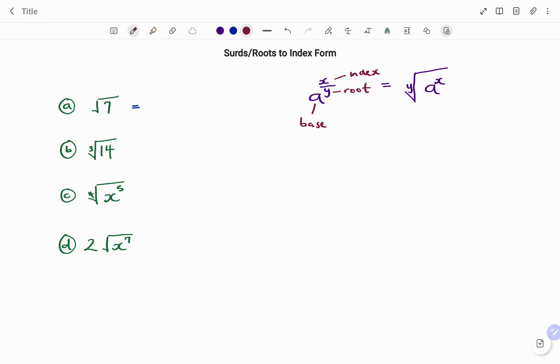If I have a root without a number written, there's an invisible two as shown. And any number or variable whose index is not written, there's an invisible one, such that I have that as my base which is seven, raised to my numerator, that's the index, that's one, over my denominator which will be the root, which is the two.